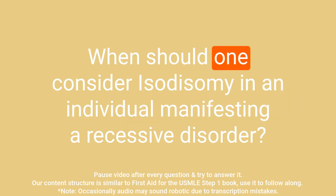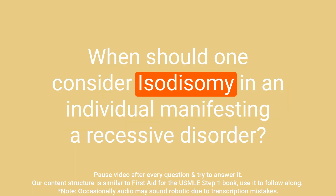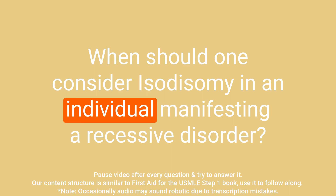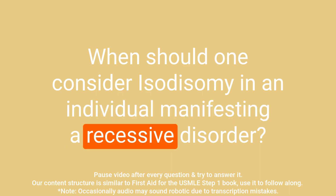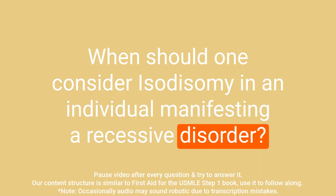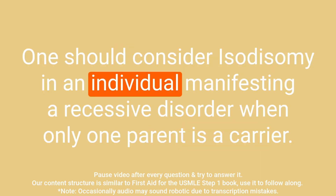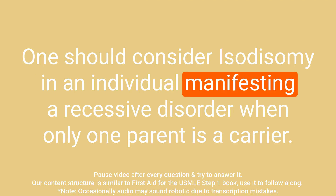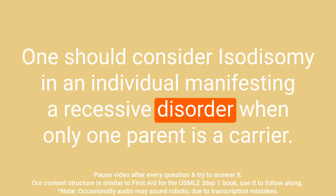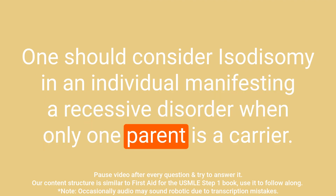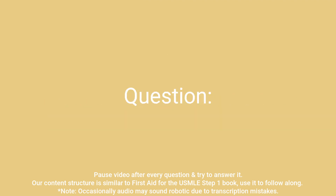Question: When should one consider isodisomy in an individual manifesting a recessive disorder? Answer: One should consider isodisomy in an individual manifesting a recessive disorder when only one parent is a carrier.